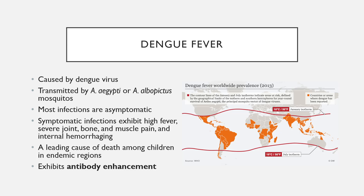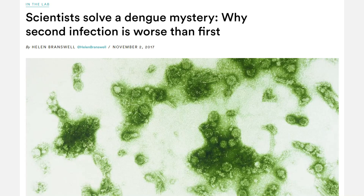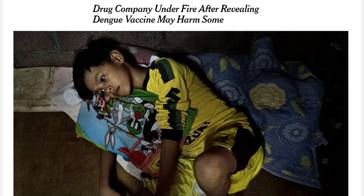Dengue fever also exhibits antibody enhancement — a phenomenon where if a person already has antibodies against the dengue virus, their secondary infection is actually worse than the primary infection, contrary to normal immune system behavior. This created a serious problem during vaccine development: in 2017, a dengue vaccine was found to act like a second infection in some previously infected children in the Philippines, causing severe dengue. The vaccine was taken off the market and a new vaccine has been under development since then that will not trigger this antibody enhancement reaction.